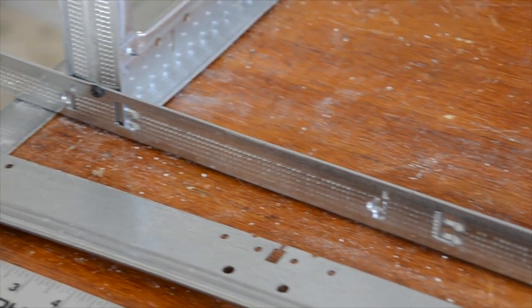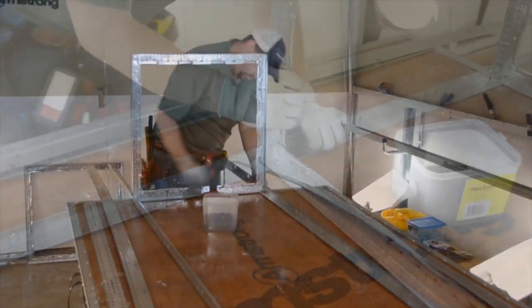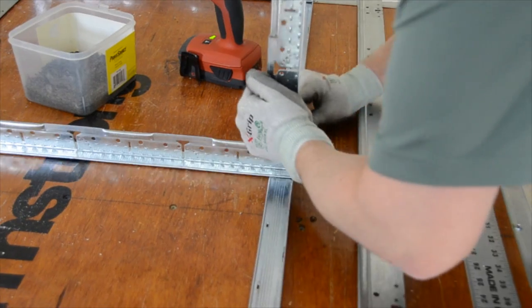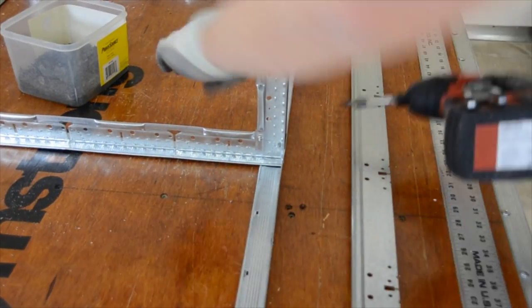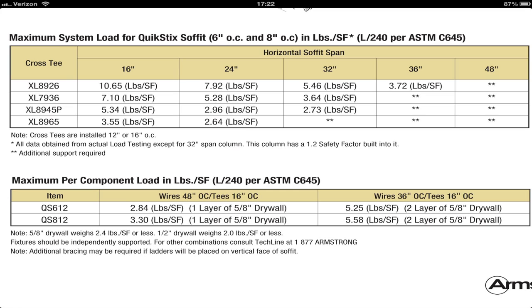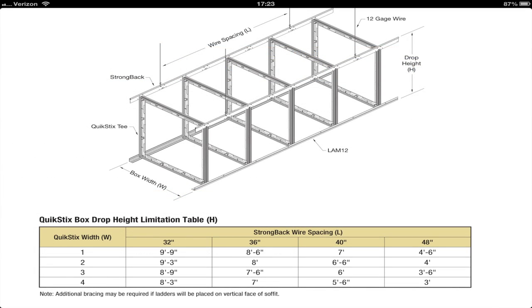We will space these boxes in this demo on two foot centers while using Armstrong Lamb locking angle molding to quickly space and lock the boxes into place. Four foot on center spacing of your boxes is also possible provided that you stay within the size guidelines on these loading charts. Your Armstrong installation specialist is always ready to help.